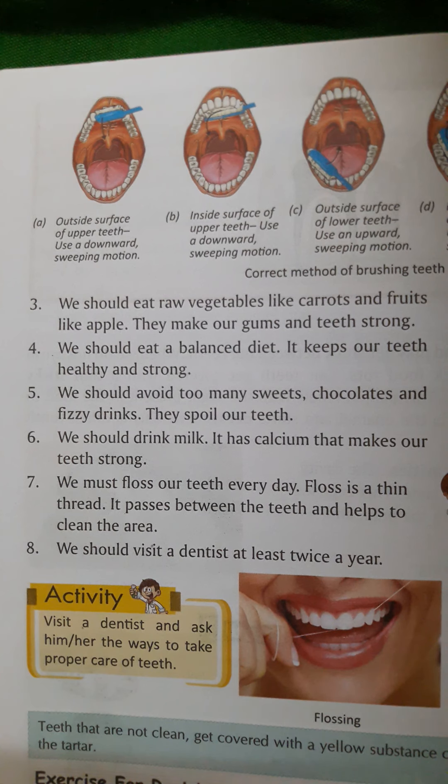Point number four: we should eat a balanced diet — it keeps our teeth healthy and strong. Point number five: we should avoid too many sweets, chocolates, and fizzy drinks like Thumbs Up, Pepsi, and other cold drinks or soft drinks, as these spoil our teeth.